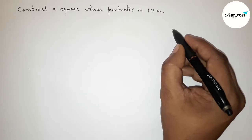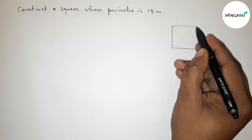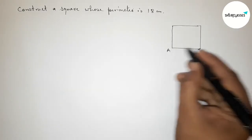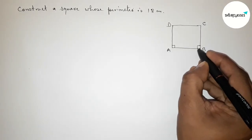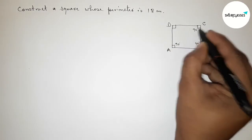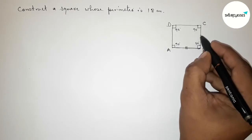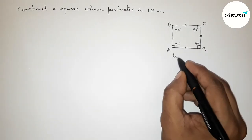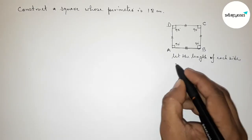First we have to find out the length of each side of the square. Drawing here a square roughly and taking points A, B, C, D. Now we know that all the angles of a square are equal and 90 degrees, and also all the sides of a square are equal.